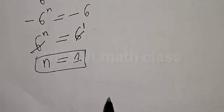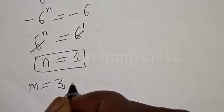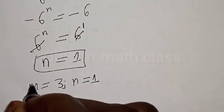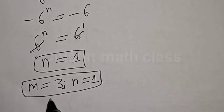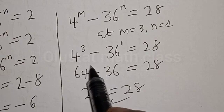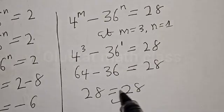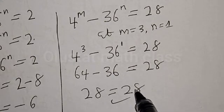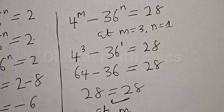Therefore our answers are m = 3 and n = 1. Those are the positive integer solutions. Let's check: 4^3 − 36^1 = 64 − 36 = 28, which equals 28 and satisfies the given equation. Our answer is confirmed at m = 3 and n = 1.